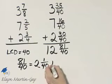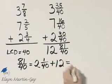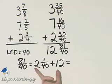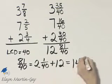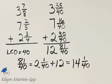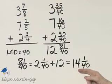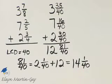We will add that to 12. Now, we'll add the whole number parts. 2 plus 12 is 14. And then we have the 1 40th. Our sum as a proper mixed number is 14 and 1 40th.